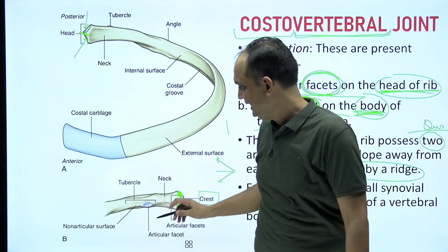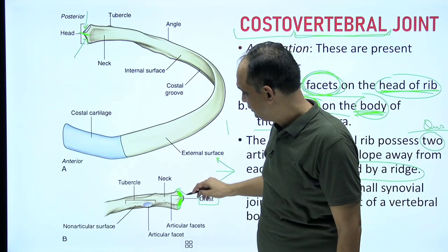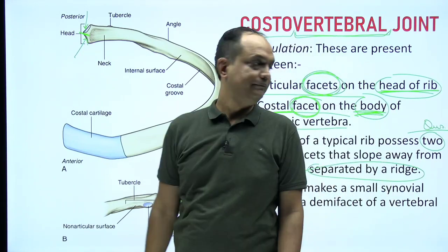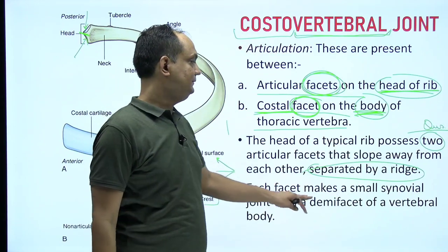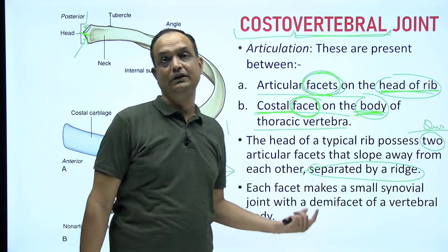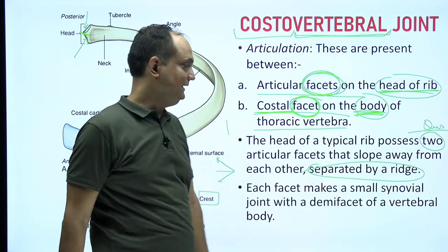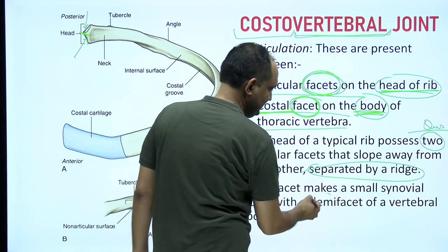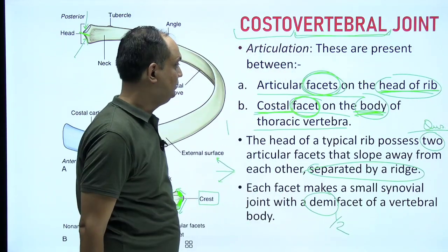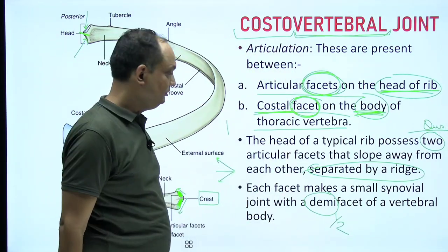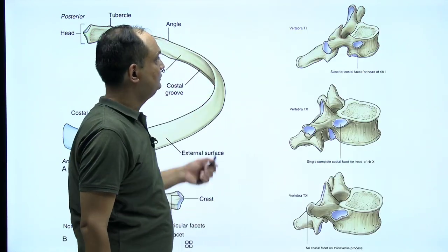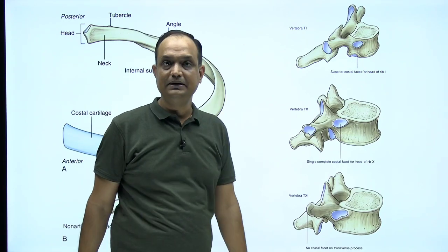Each facet makes a small synovial joint with the demi-facet of the vertebral body. 'Demi' means half, so on the vertebral body you find a half-facet on the upper and lower parts. You can appreciate this on the side view of thoracic vertebrae shown in the images.